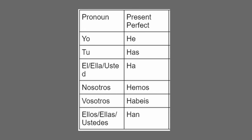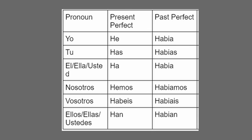Using hablar for all perfect tenses: In the present perfect — yo he hablado (I have spoken), tú has hablado (you have spoken), él/ella/usted ha hablado (he/she/you formally have spoken), nosotros hemos hablado (we have spoken), vosotros habéis hablado (you all have spoken), ellos/ellas/ustedes han hablado (they/you all have spoken). In the past perfect — yo había hablado (I had spoken), tú habías hablado (you had spoken), él/ella/usted había hablado (he/she/you formally had spoken), nosotros habíamos hablado (we had spoken), vosotros habíais hablado (you all had spoken), ellos/ellas/ustedes habían hablado (they/you all had spoken).